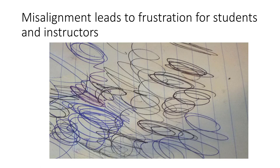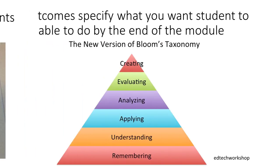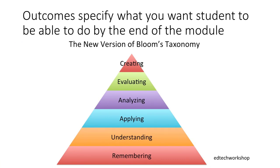Students receive mixed messages about what they should learn. Students also spend time on activities that do not lead to intended goals, or you may overestimate or underestimate the effectiveness of instruction. Module learning outcomes specify what you want students to be able to do by the end of the module. Write your module outcomes using words familiar to students to help them understand what you expect them to accomplish.